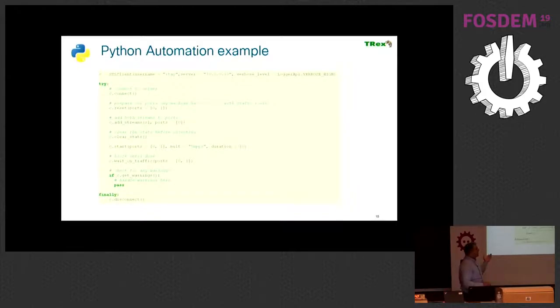There is the API. It's the API in Python that we wrap everything. In this way, we're connecting to the server, then reset everything, reset all the statistics, add the stream that I showed already, clear the statistics, start the traffic. Here I can multiply it and say that the traffic I want is 5 megapackets per second for duration of 10 seconds, and then I can wait. After I wait, I can get the statistics: how many packets, how many drops, how many packets were sent, and so forth.